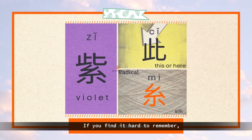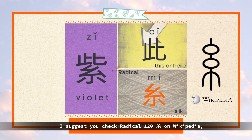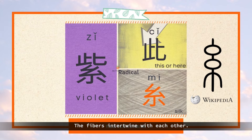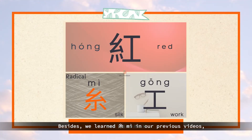If you find it hard to remember, I suggest you check radical 120, mi, on Wikipedia. There's a single script character that looks exactly like a single thread, with the fibers intertwining with each other.